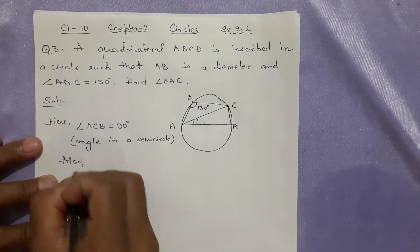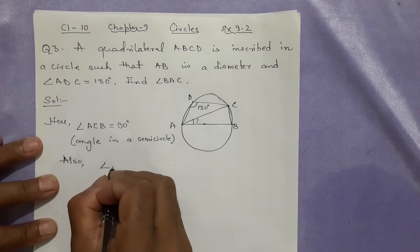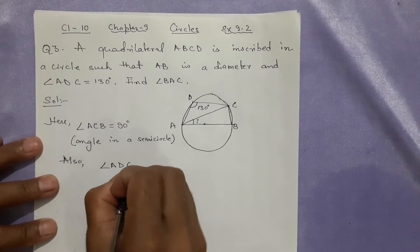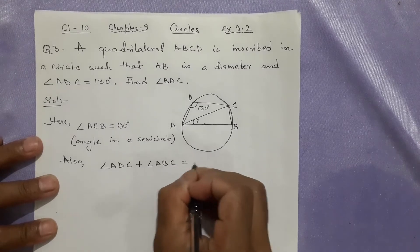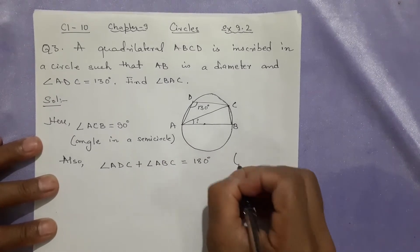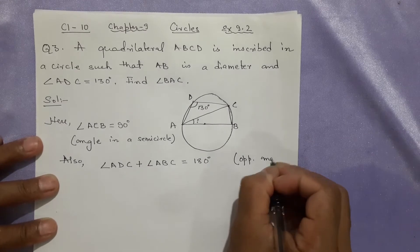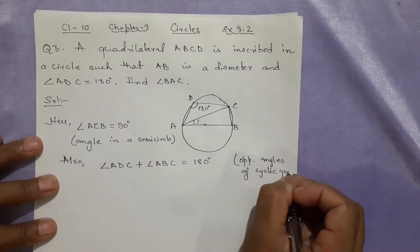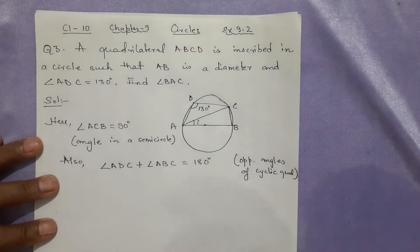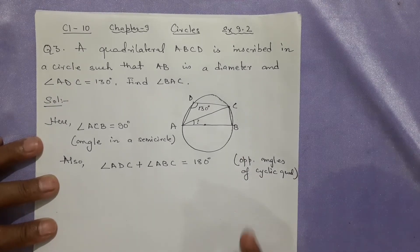Also, angle ADC + angle ABC = 180° because opposite angles of a cyclic quadrilateral sum to 180°. This is one of the theorems.